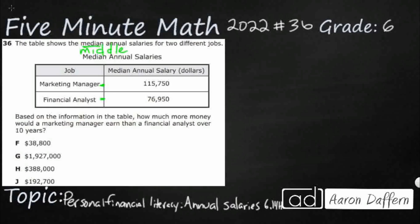Based on the information in the table, how much more money would a marketing manager earn than a financial analyst over 10 years? So our annual salaries: we've got $115,750 for the marketing manager — obviously that's more — and $76,950 for the financial analyst. One of the things we want you to learn in 6th grade is you get this salary year after year. So after 10 years, while this might not look like that big of a difference, we'll see how big of a difference it really is.